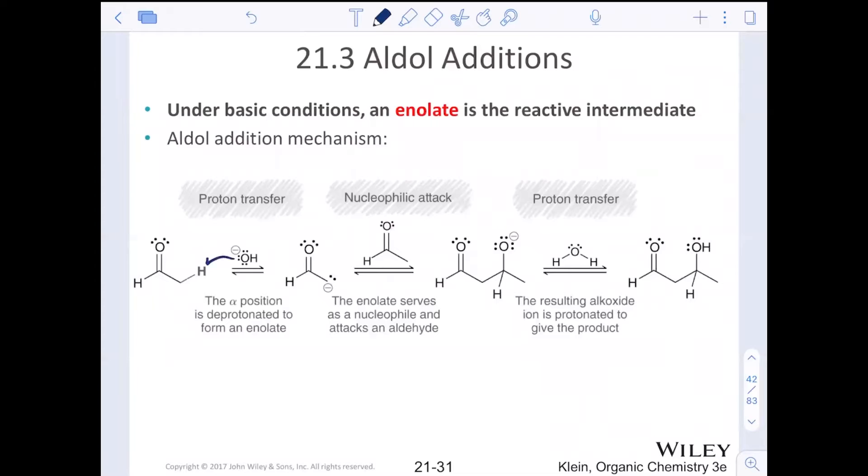In that first step, we'll do a proton transfer where we attack the alpha carbon to pop a lone pair on that alpha. This is where it's in equilibrium with other aldehydes. We take a second equivalent of aldehyde and we can do a reaction at the carbonyl. That carbonyl is going to become the beta of the product. The alpha beta bond is formed in that second step, the nucleophilic attack, and then proton transfer to make the beta hydroxy.